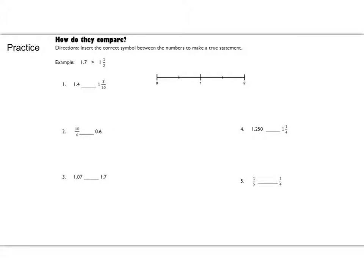Here are some practice problems that in some cases involve comparing fractions to decimals. We'll use the technique of converting the fraction to a decimal in order to make the comparison. Take a look at this first example: Is 1.7 greater than 1 and a half? If we convert the fraction to a decimal, that gives us 1.5. When I compare the 7 and the 5, that tells me that 1.7 is greater. Pause the video, do the rest of these problems, and check back when you're done.